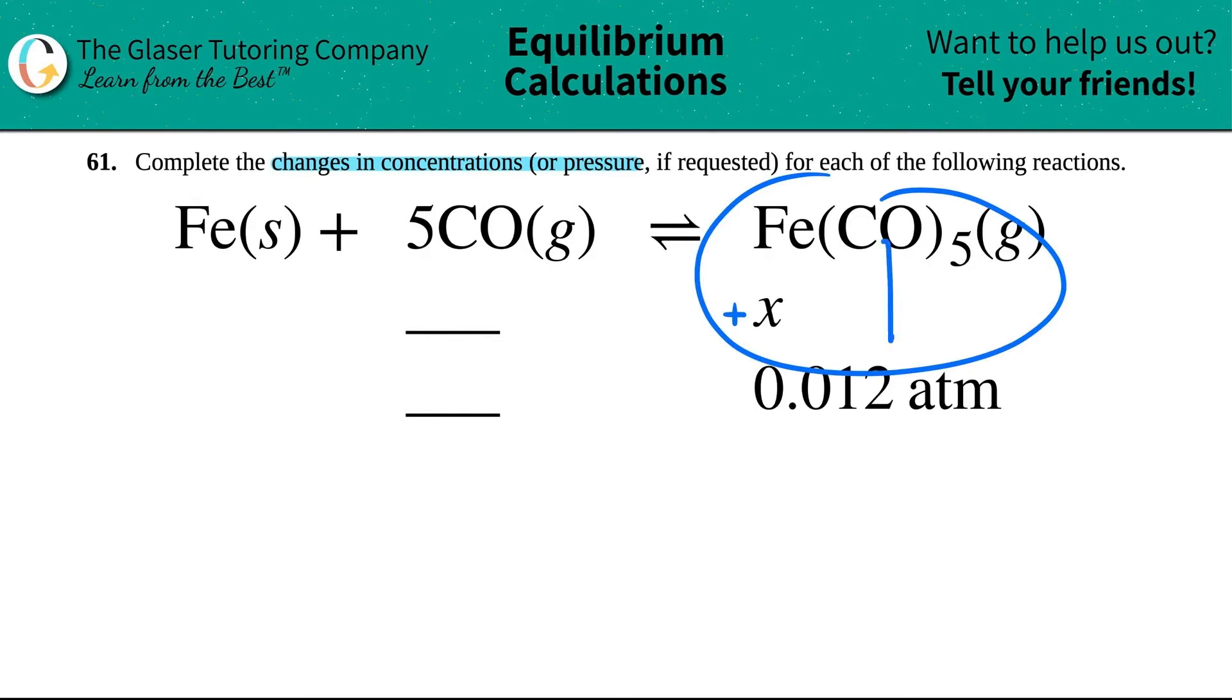So if my product is increasing, what's going to happen to this reactant? Yeah, it's going to drop. If the products are increasing, the reactants have to decrease. It's like a give and take type system. That's all chemistry. So the 5CO would be minused by something. Minus means decreasing, plus means increasing in this case.